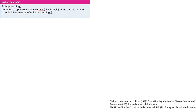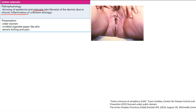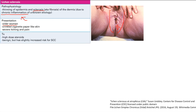Lichen sclerosis: the pathophysiology is thinning of the epidermis and sclerosis — fibrosis — of the dermis, due to chronic inflammation. Symptoms include itching and pain. Sclerosis means hardening and tightening of tissue, so the skin wrinkles up, appearing thin and whitish — like cigarette paper. You'll typically see this in an older woman. Treatment is high-dose steroids. Prognosis is benign, but there's a slightly increased risk of squamous cell carcinoma.